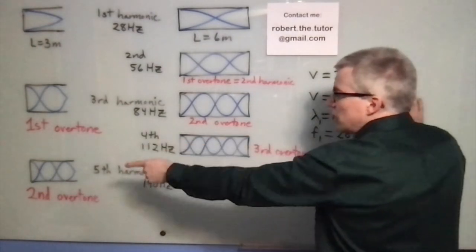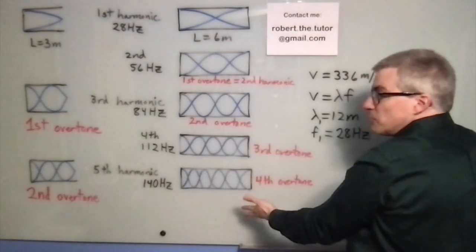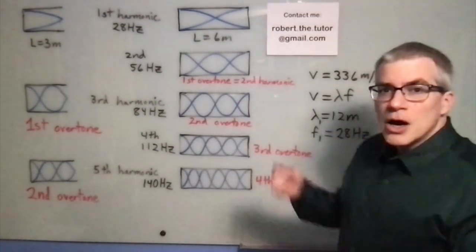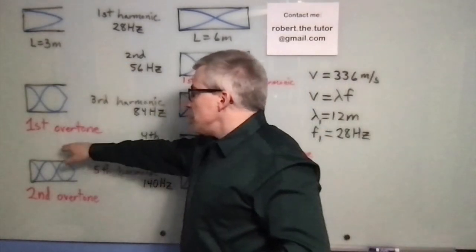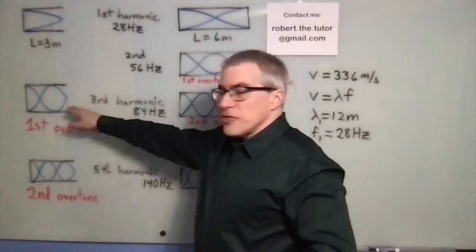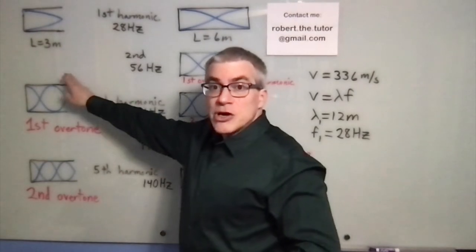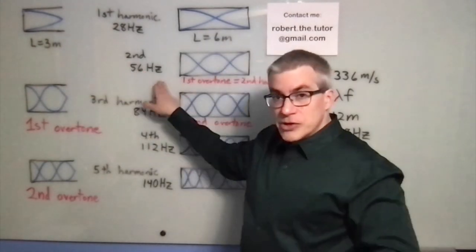So that pipe only gives you odd multiples, this one gives you all of the multiples. Overtones are counting waves that actually exist. Right here we have the first overtone, but it's the third harmonic. There is no second harmonic, because it will not resonate at 56 hertz.